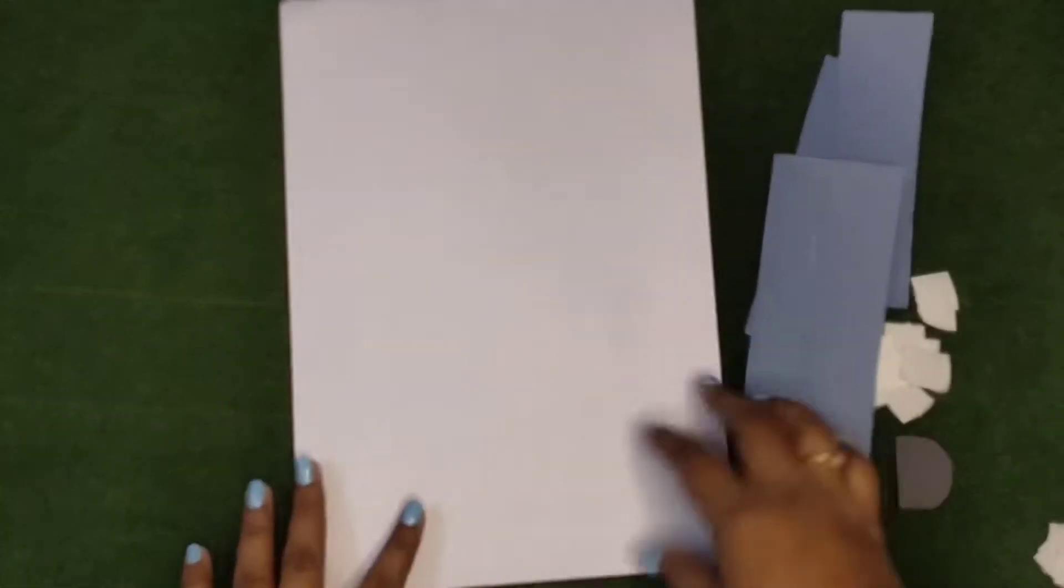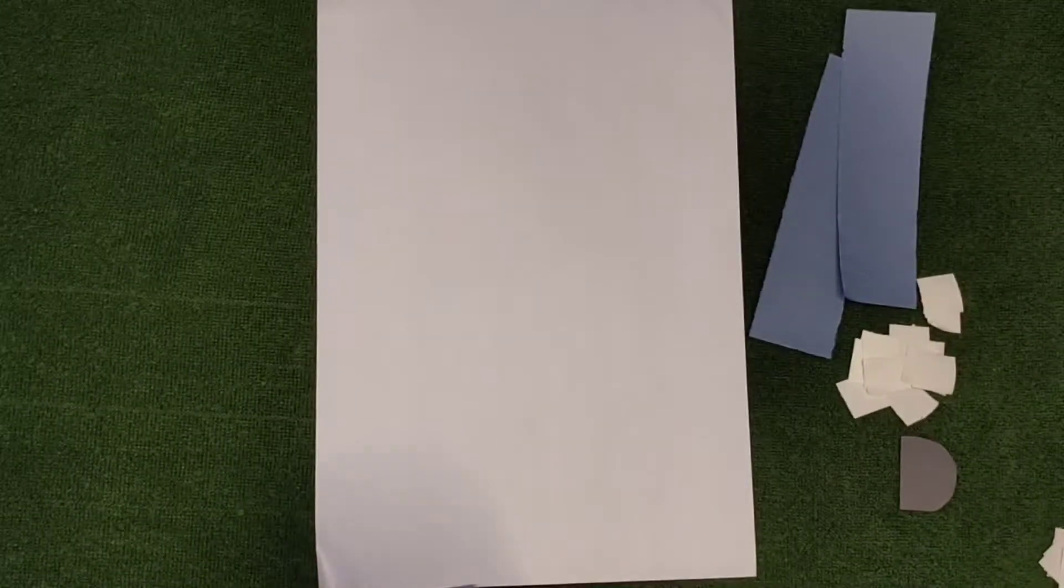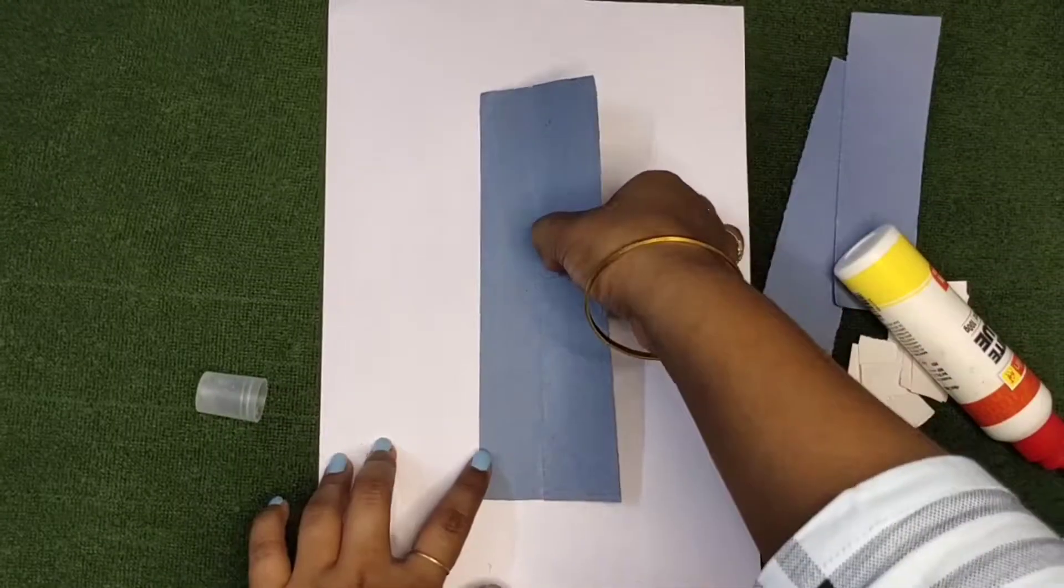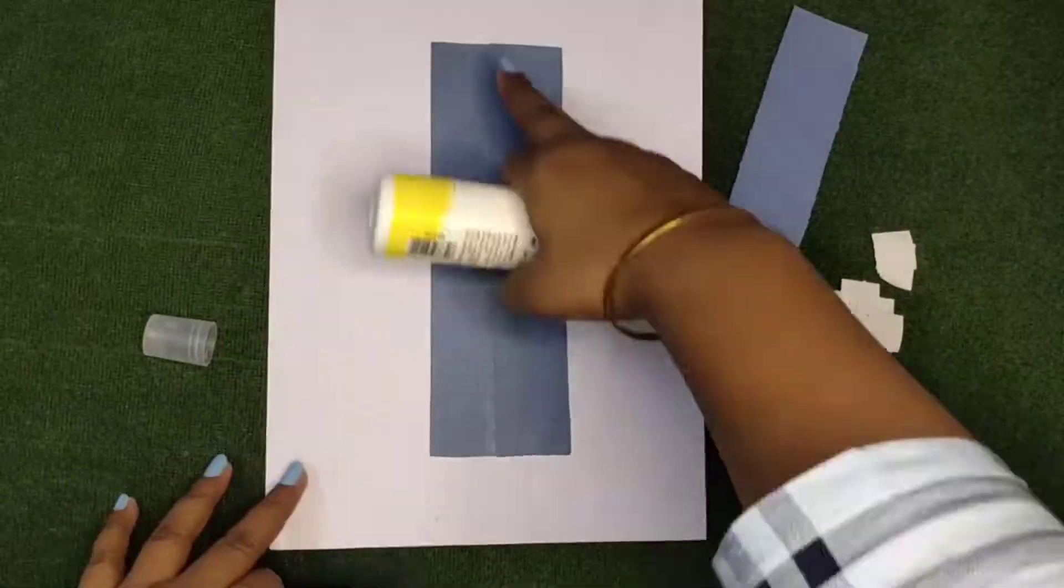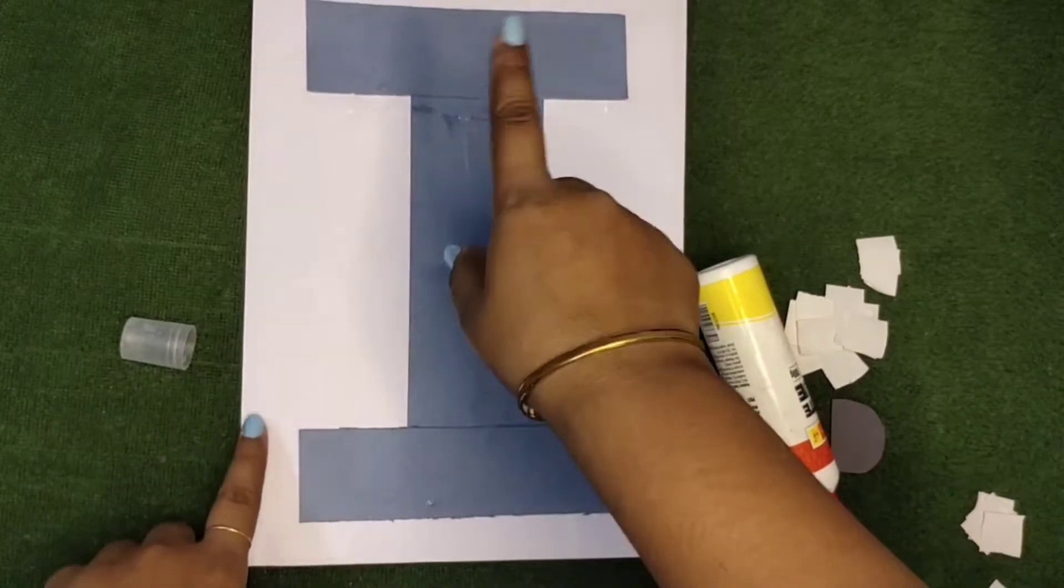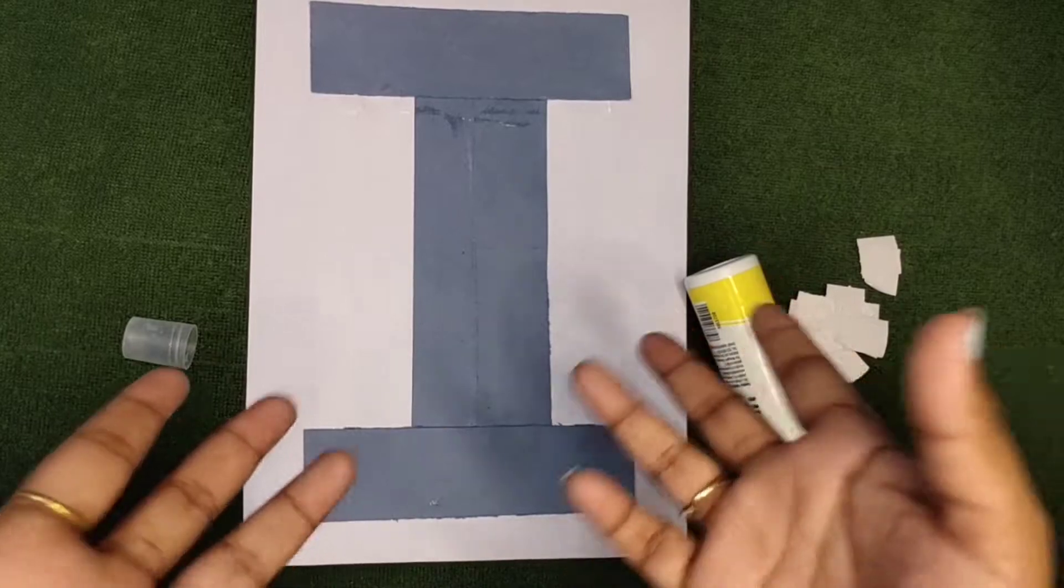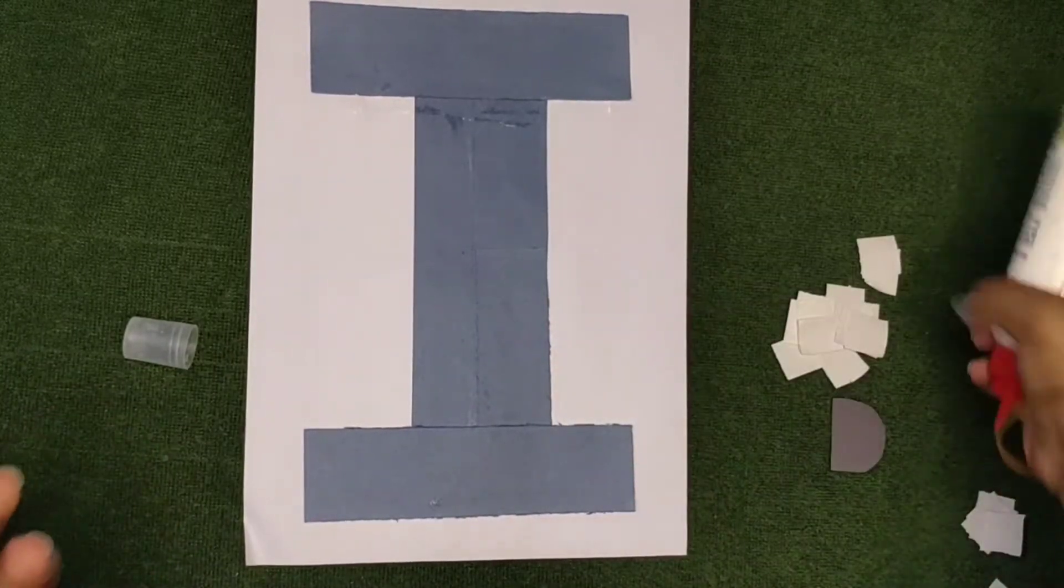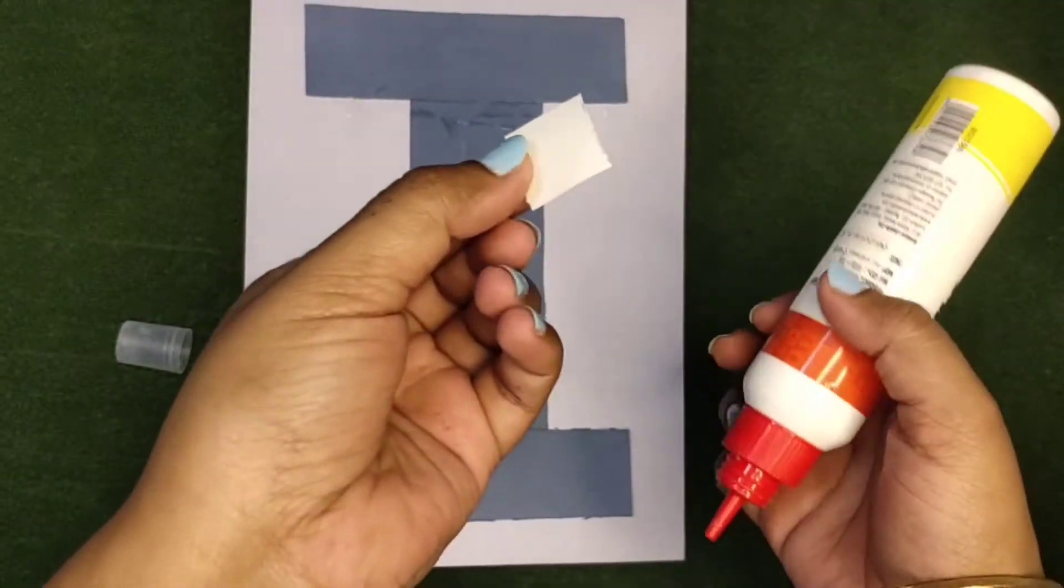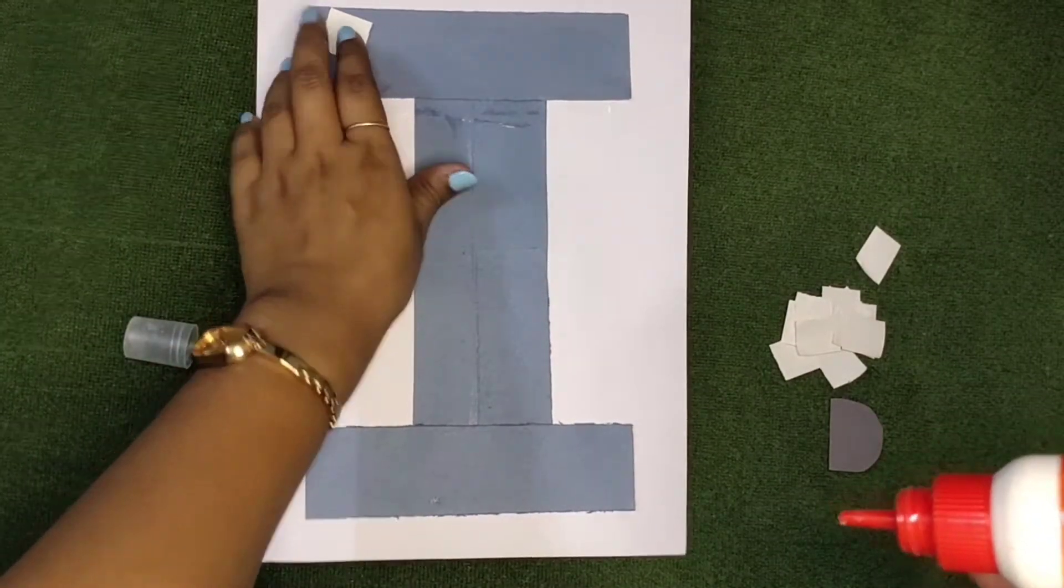So today we are making letter I craft. First we will make capital I then small i. See I have pasted standing line then slipping line, slipping line. This is our letter I. But we always used to make our vocabulary related to letters. So first we will paste these square shaped cut outs randomly and cover this blue part.